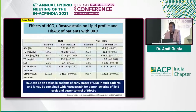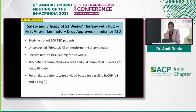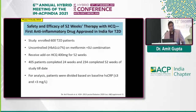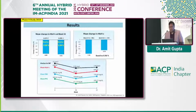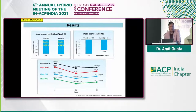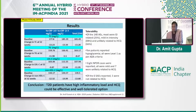An important Indian study assessed the safety and efficacy of HCQ — the first anti-inflammatory drug approved in India for diabetes. This study included 405 patients over 24 weeks, with 234 completing 34 weeks. Patients were divided based on high-sensitivity CRP levels. There was a significant change in mean HbA1c values at week 52, along with reduction in hs-CRP levels in the HCQ-treated arm.